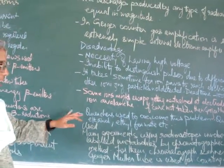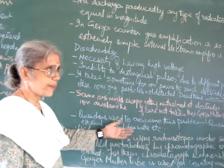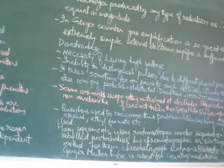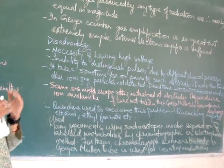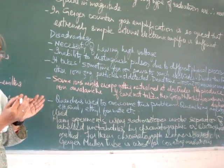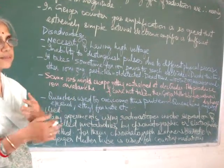Quenchers generally used are alcohol, ethyl formate or halogens. When radioactive event takes place, radiations strike the gas atoms,